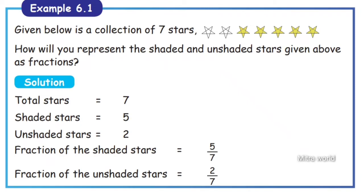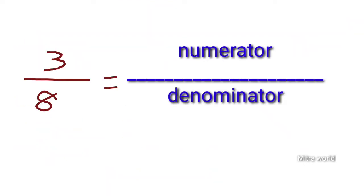Unshaded stars is 2, so the fraction is 2 by 7. The number above the line is called the numerator. The number below the line is called the denominator. The small line in between is called the division bar.